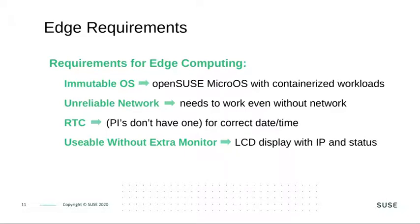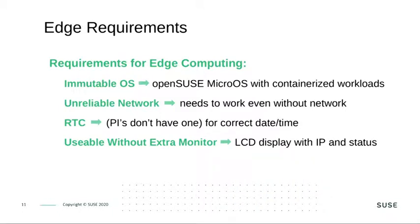Unreliable network — if you think about trains, if they are in a tunnel, then they have no network connection anymore, but the whole thing needs to continue to work. We will use Raspberry Pis for this demo, and they don't have a real-time clock for correct time and date, so we use an external real-time clock so that certificates and similar things always work. And the whole thing needs to be used without an extra monitor — you need an LCD display which follows the status and IP address.